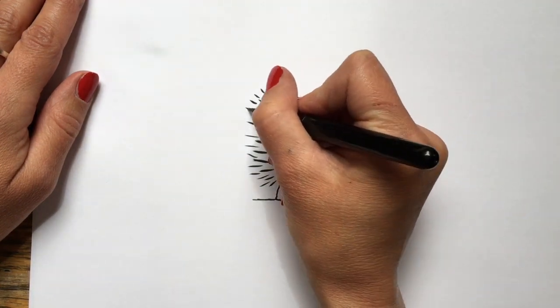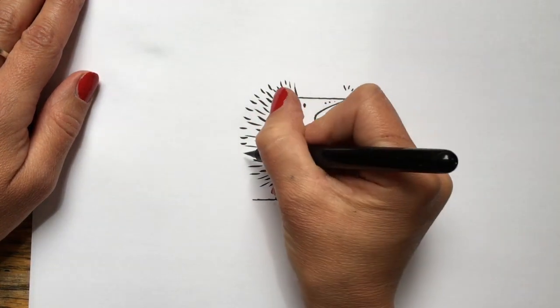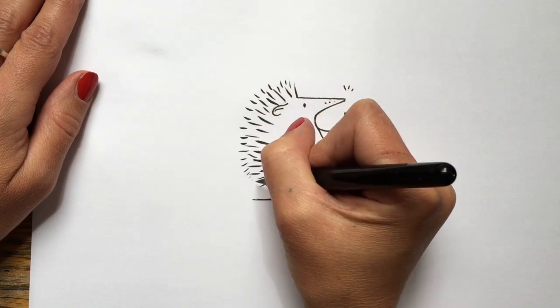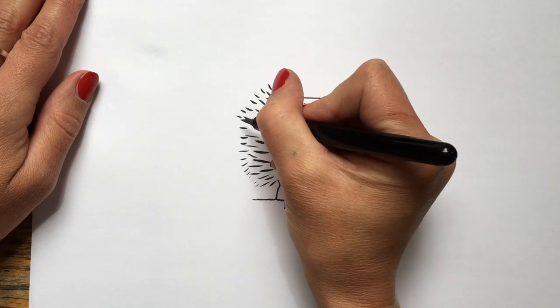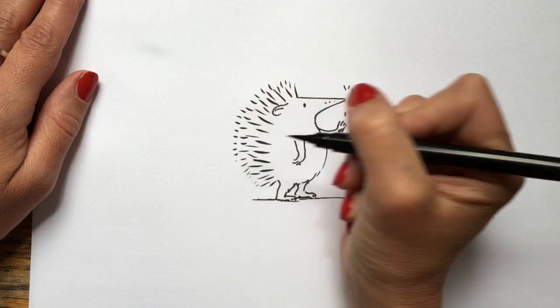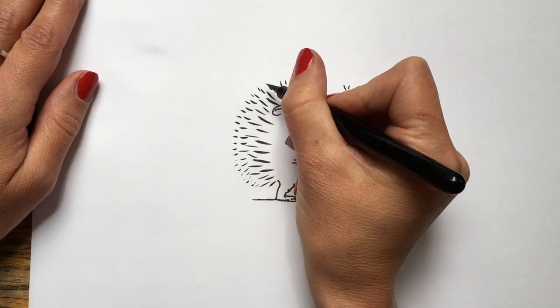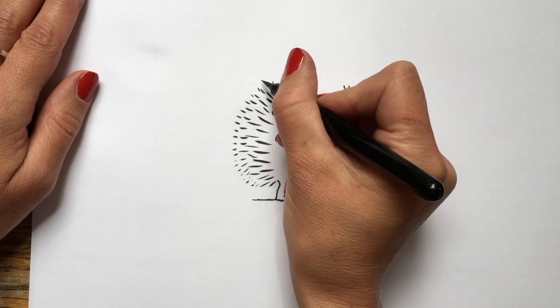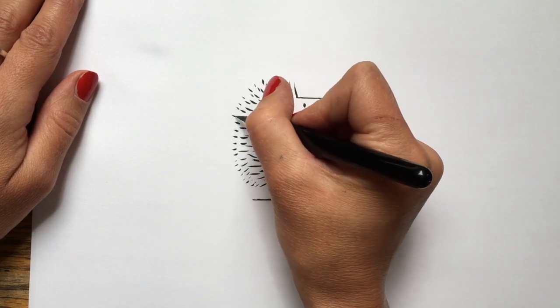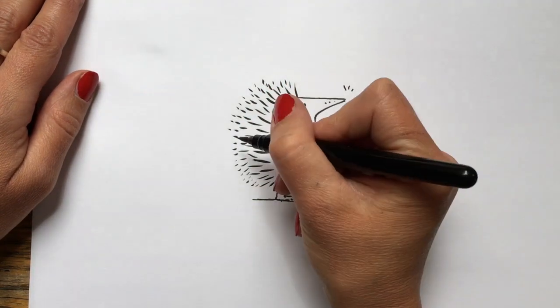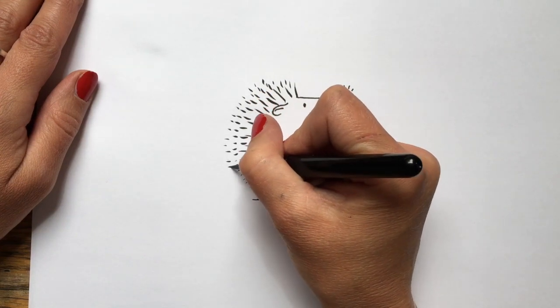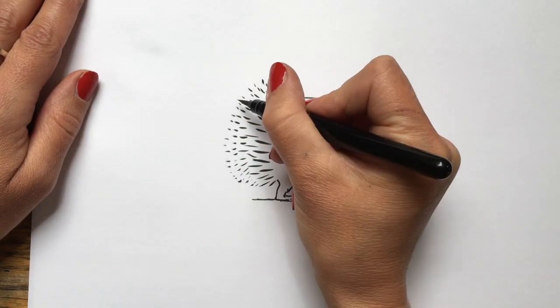And then as we go further out his spikes, the spikes get smaller. And it gives him a sort of rounded look, doesn't it? It almost looks like a dandelion clock, doesn't he? You could blow him and all his spikes would blow away. There we go. All the way round. Smaller and smaller as they go outwards.